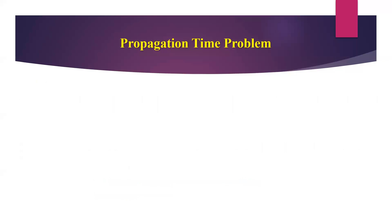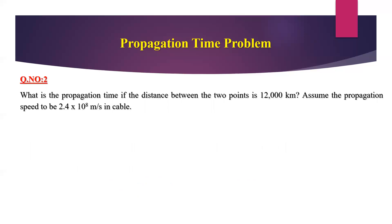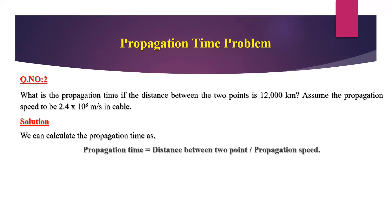The next question: what is the propagation time if the distance between two points is 12,000 kilometers? Assume that the propagation speed is 2.4 × 10⁸ meters per second in cable. The solution requires calculating the propagation time using the formula: propagation time equals distance between two points divided by propagation speed. We have two known values: distance = 12,000 km, and propagation speed = 2.4 × 10⁸ m/s.